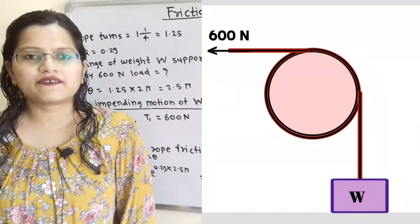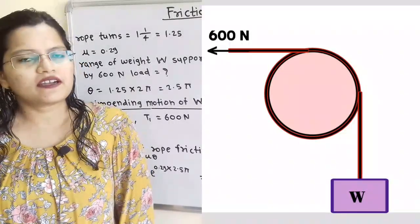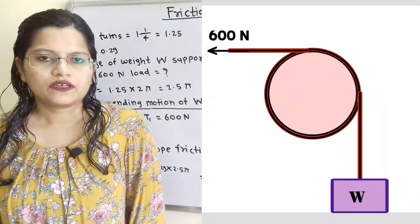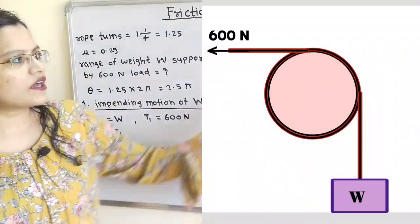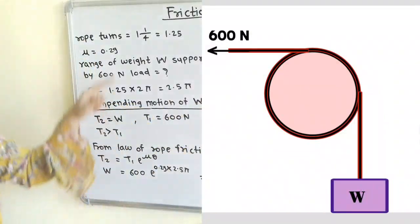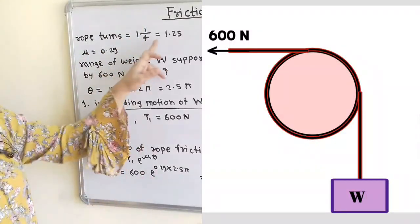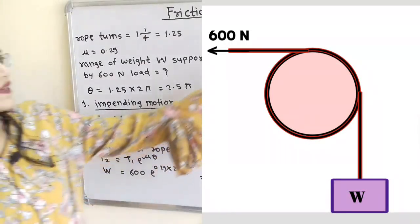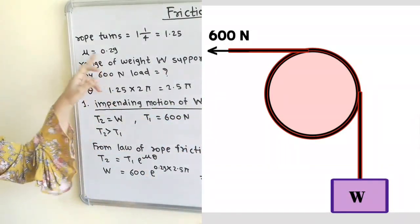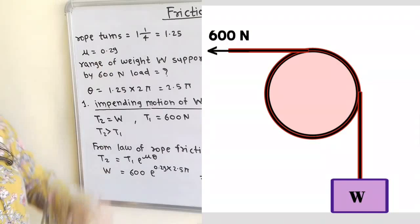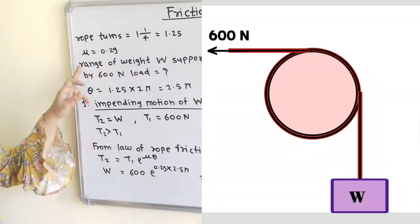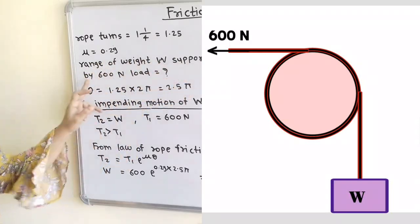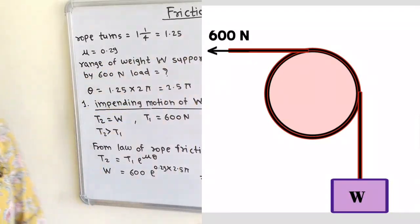This is a question of rope friction. We will understand the given data with the help of a diagram. The number of rope turns around the disc is given as 1 and 1 quarter, which is equal to 1.25. The coefficient of friction between the rope and disc is mu = 0.29. We have to find the range of weight W supported by a 600 N load.